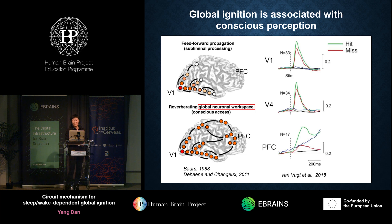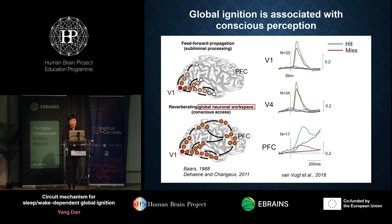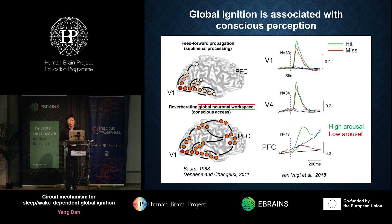If the signal only activates the sensory cortex but fails to ignite the global workspace, then the signal would die down quickly and the stimulus would remain subliminal. As a direct test of this, I'm showing Peter's data — you can see that even in the miss trials when the monkey failed to detect the stimulus, V1 neurons still show pretty robust responses. But in the prefrontal cortex, the responses during the miss trials are much lower than in the hit trials. One potential explanation is the fluctuating level of arousal and attention — if the monkey was more alert and attentive in some trials, he's more likely to perceive the stimulus.